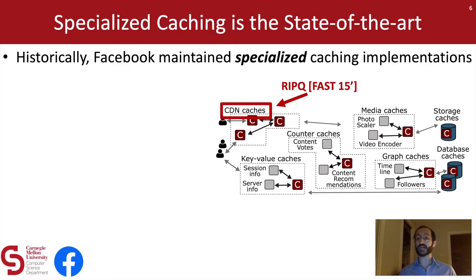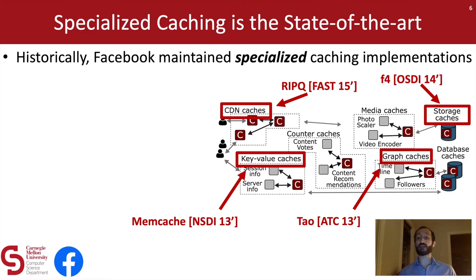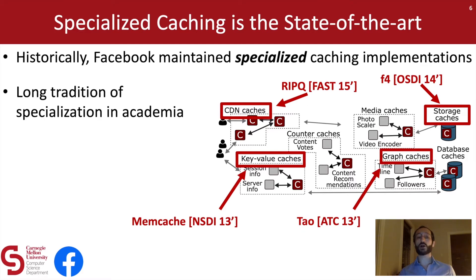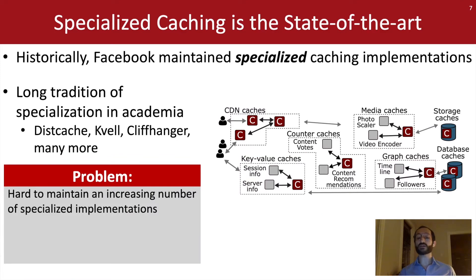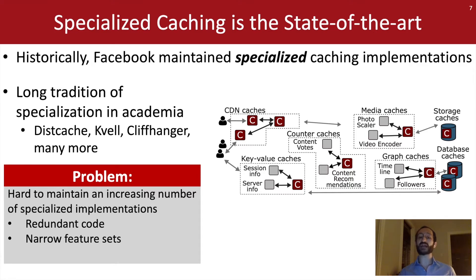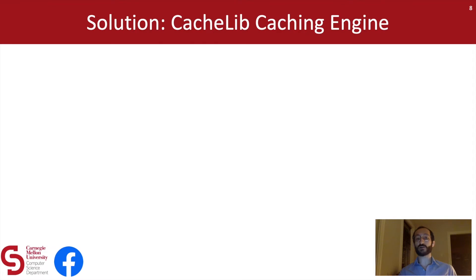We can see that historically Facebook has done this if we look at the USENIX literature over the last 10 years. Facebook has published papers about its CDN cache, key value cache, storage cache, and social graph cache. But this is true outside of Facebook as well — there's a long tradition in academia of publishing specialized cache papers. The problem is, as the number of caching use cases increases, it's increasingly hard to manage these specialized implementations. They tend to share a lot of redundant code, each with a fairly narrow feature set, and perhaps most importantly, this represents a barrier to implementing new ideas in caching. If I write a new caching paper for OSDI, I have to have that idea implemented in potentially hundreds of different cache implementations before it really sees wide uptake at a place like Facebook.